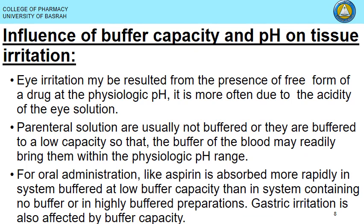If preparing a solution for IV administration where the pH must differ from physiological pH, use a buffer with low capacity so the blood can bring the pH back to 7.4. We use buffers primarily to improve drug stability, since most drugs are not stable without pH adjustment. If a stable pH is needed away from blood pH, a low-capacity buffer allows the blood to easily re-equilibrate.